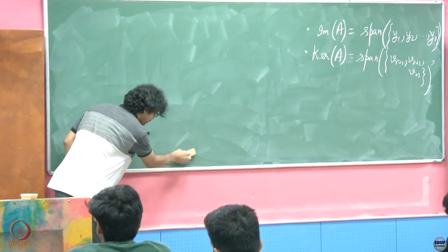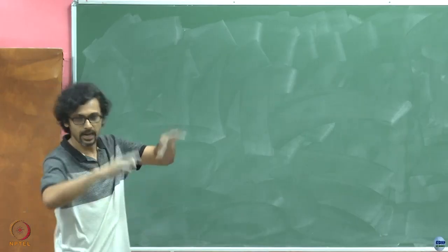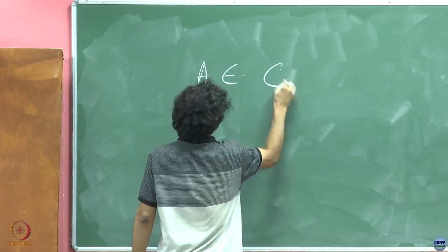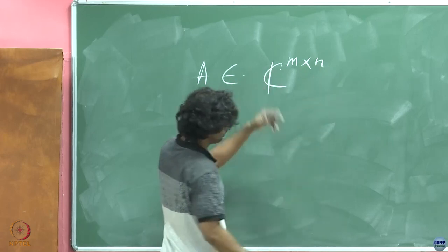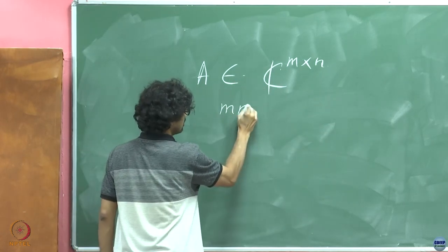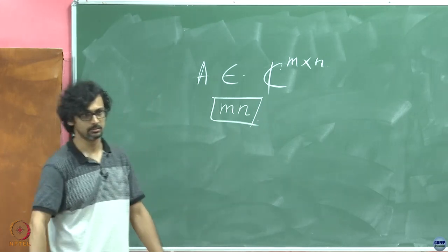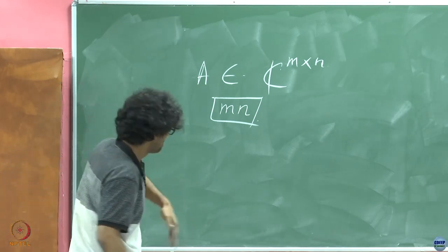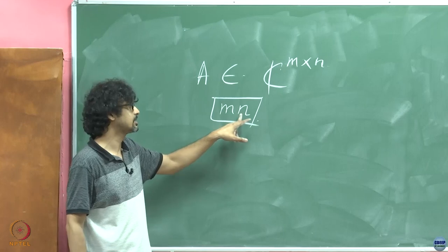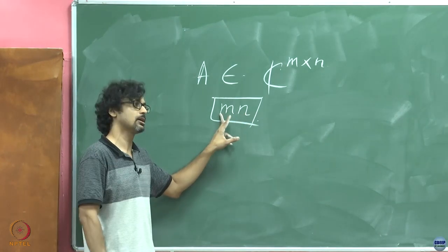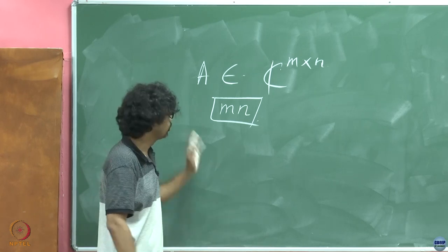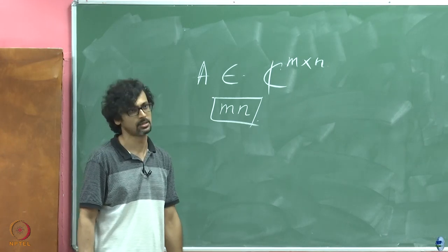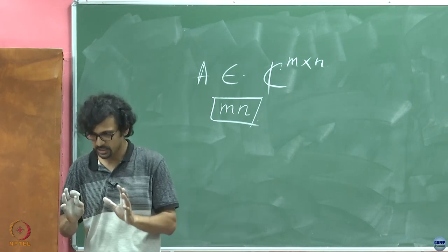So if you are transmitting data in the form of a matrix through a channel, an array of numbers. So if you have a matrix A that belongs to say, I mean you can take it to be real numbers, complex numbers, whatever it is. How many numbers are there? How many numbers are there? You are transmitting MN variables. And sometimes if M and N are very large, this is a different ball game.